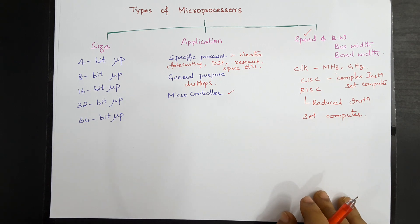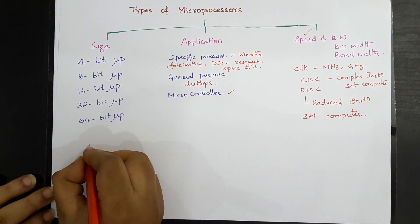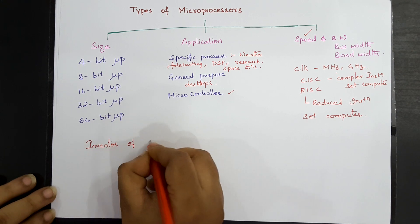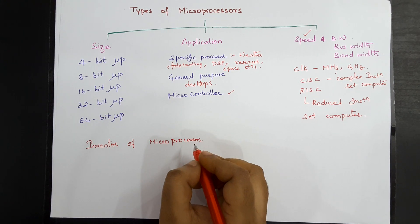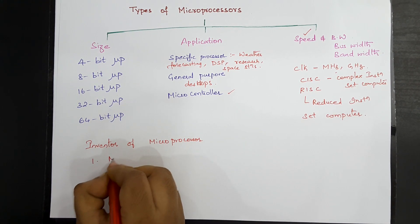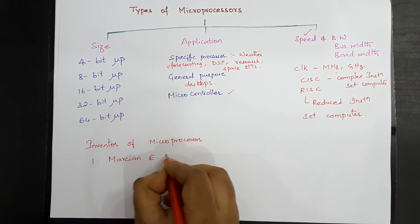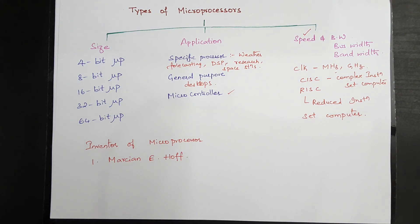This covers the introduction to microprocessors. Regarding the inventor of the microprocessor, also referred to as the father of the microprocessor, the name that immediately comes to mind is Marcian E. Hoff, who is the inventor of the microprocessor.